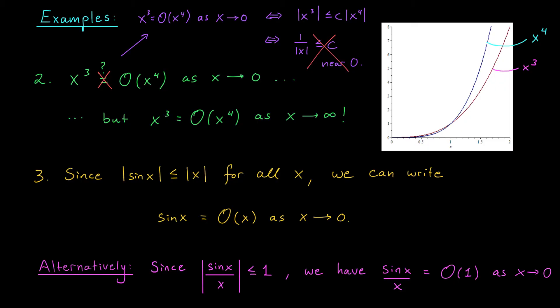Here's a slightly different example where we aren't just considering powers of X. The absolute value of sine of X is less than or equal to the absolute value of X for all real numbers X. According to our definition of big O, this is saying that sine of X is equal to big O of X, and this actually holds everywhere, but in particular when X approaches zero. Alternatively, if we divide both sides of this inequality by the absolute value of X, we find that the absolute value of sine X over X is less than or equal to 1 for all X not equal to zero. According to our definition of big O, sine X over X is equal to big O of 1 as X approaches zero. So even though this function is not defined at X equals zero, we can still say it's big O of 1 because the inequality holds for all points nearby.